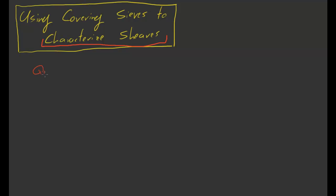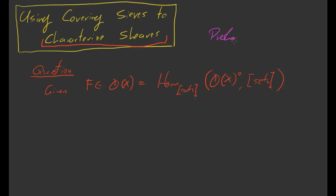The question is this: given some pre-sheaf F inside of Ô(X), which is equal to Hom in the category of categories from O(X)^op into Sets — also known as the category of pre-sheaves on X — when is F a sheaf on X? We just want to know when a given pre-sheaf turns out to be a sheaf.